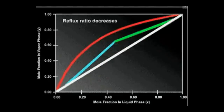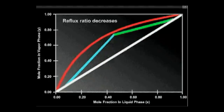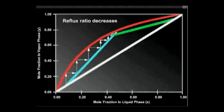If the reflux ratio decreases, the two operating lines move toward the equilibrium line. The individual equilibrium stage steps become smaller, and consequently more equilibrium stages are required for a given separation.